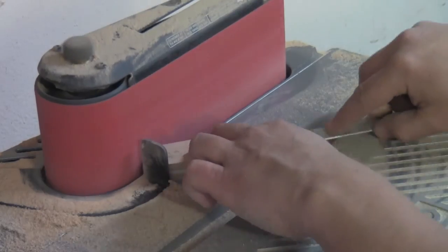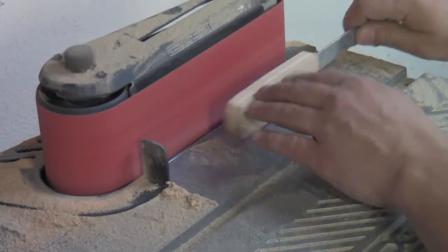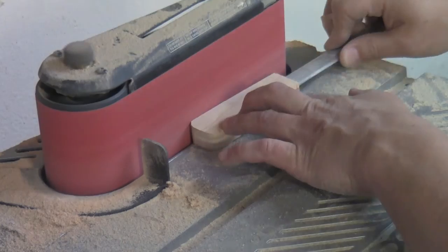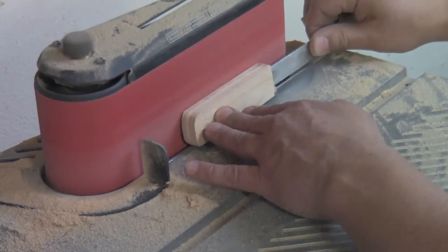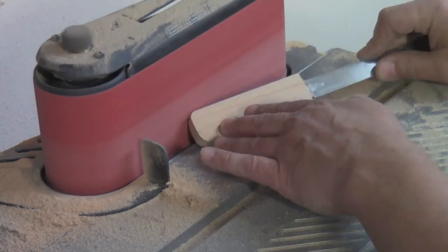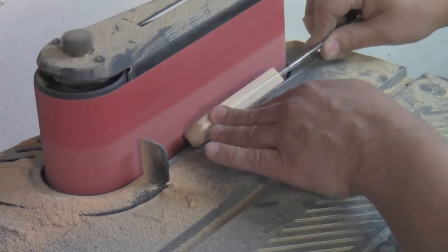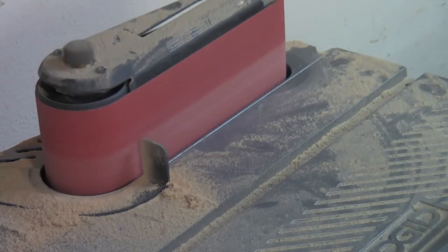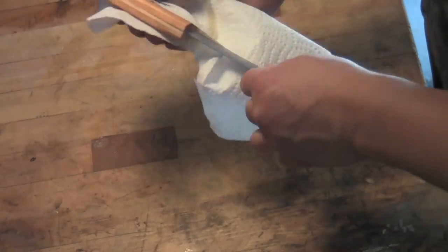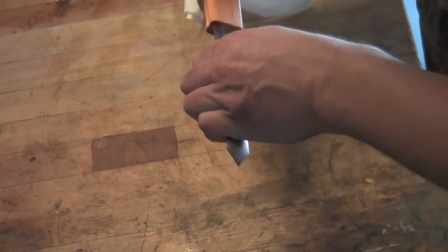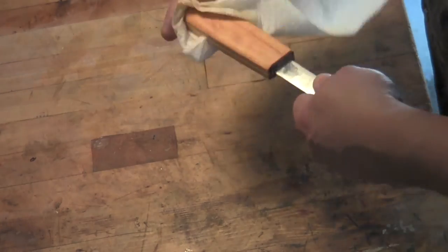The oscillating belt sander is good for cleaning up the edges and rounding up the corners. Then I'll finish the wood with a combination of boiled linseed oil and varnish, kind of a homegrown Danish oil.